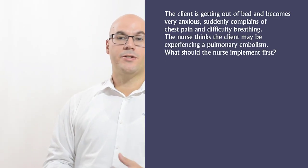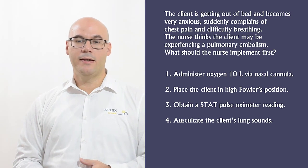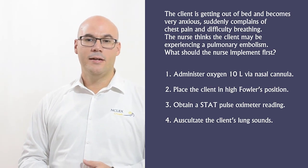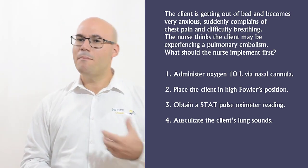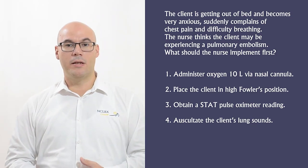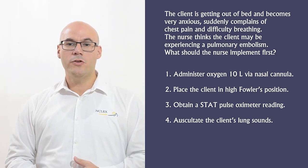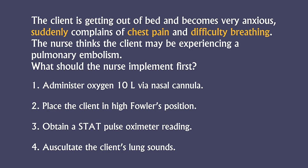The client is getting out of bed and becomes very anxious. Suddenly, complaints of chest pain and difficulty breathing. The nurse thinks the client may be experiencing a pulmonary embolism. What should the nurse implement first? One: administer oxygen 10 liters via nasal cannula. Two: place the client in high Fowler's position. Three: obtain a stat pulse oximeter reading. Four: auscultate the client's lung sounds.